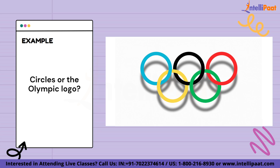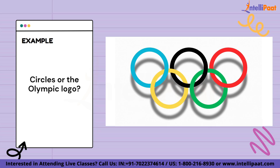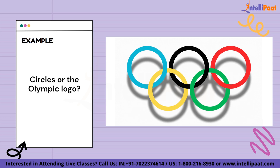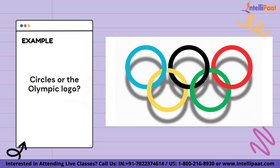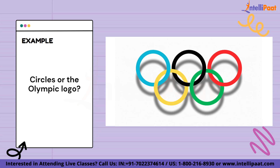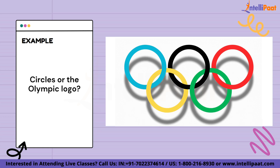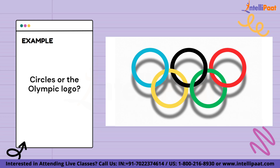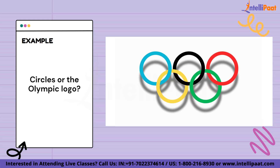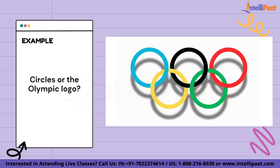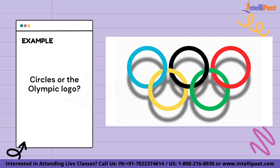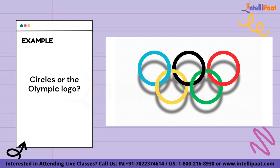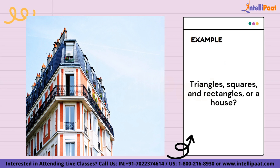A classic example of this law is how people perceive the Olympic logo. How would you describe it to someone? If you say that it's a set of five overlapping circles, most people would agree with you, since interpreting it as a combination of connected lines would be unnecessarily challenging for our minds. Even if you don't find that too complicated, thinking of an object in its simplest form possible helps us recall things much quicker by demanding fewer cognitive resources.